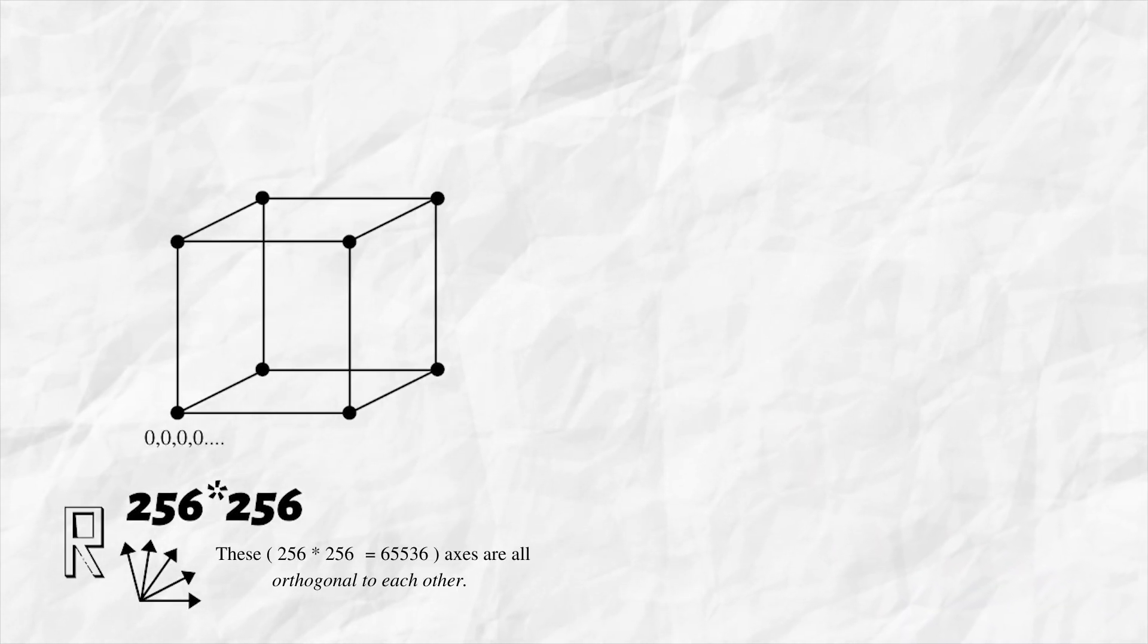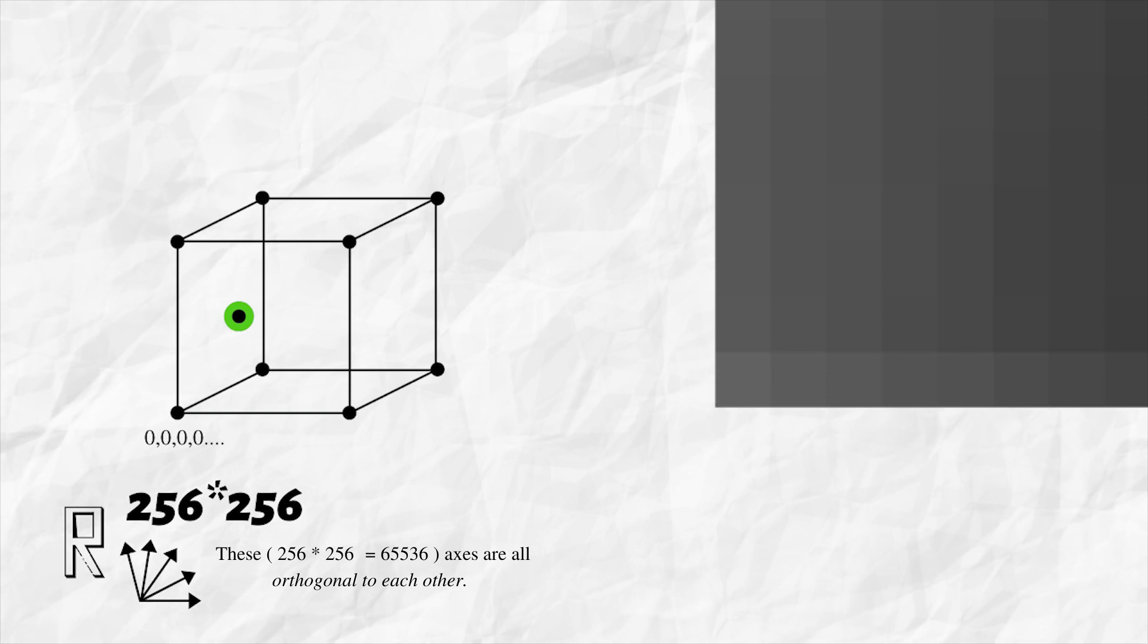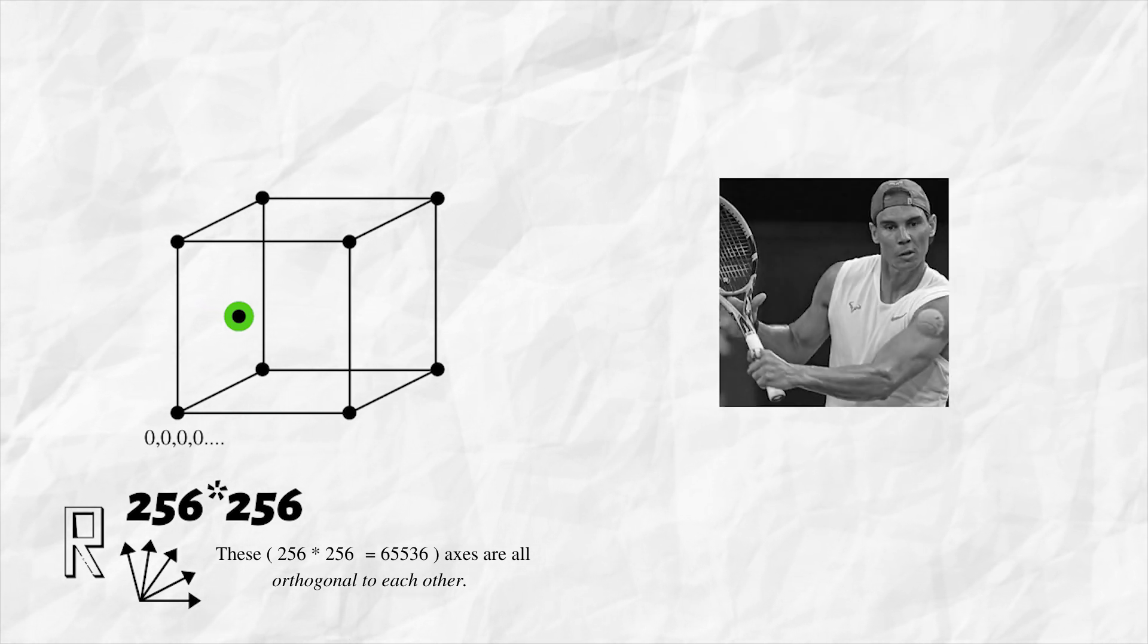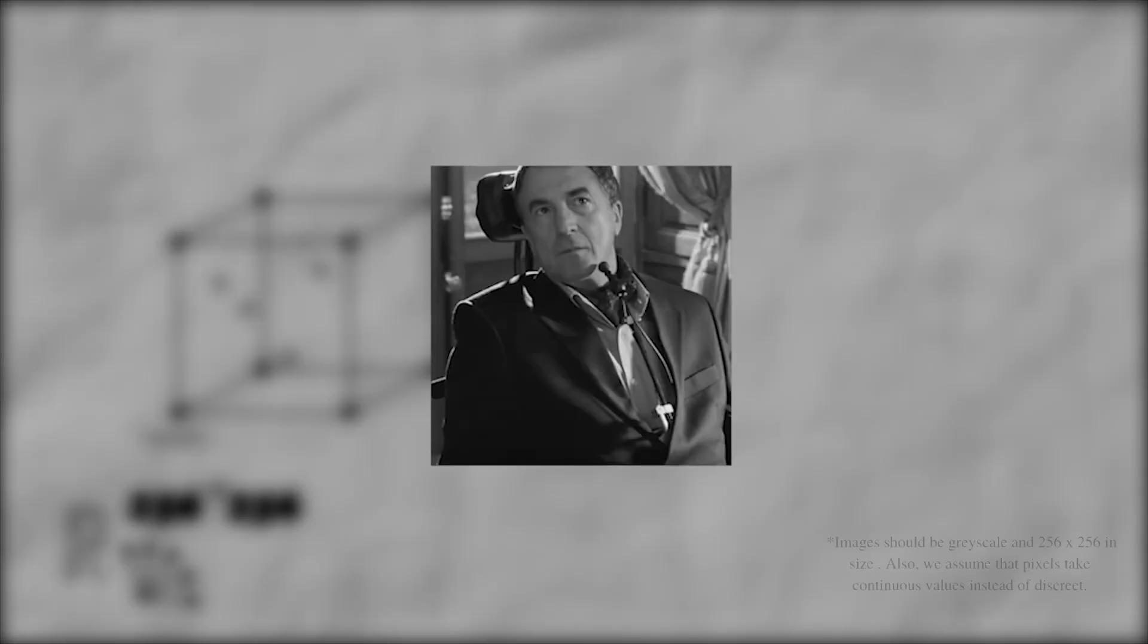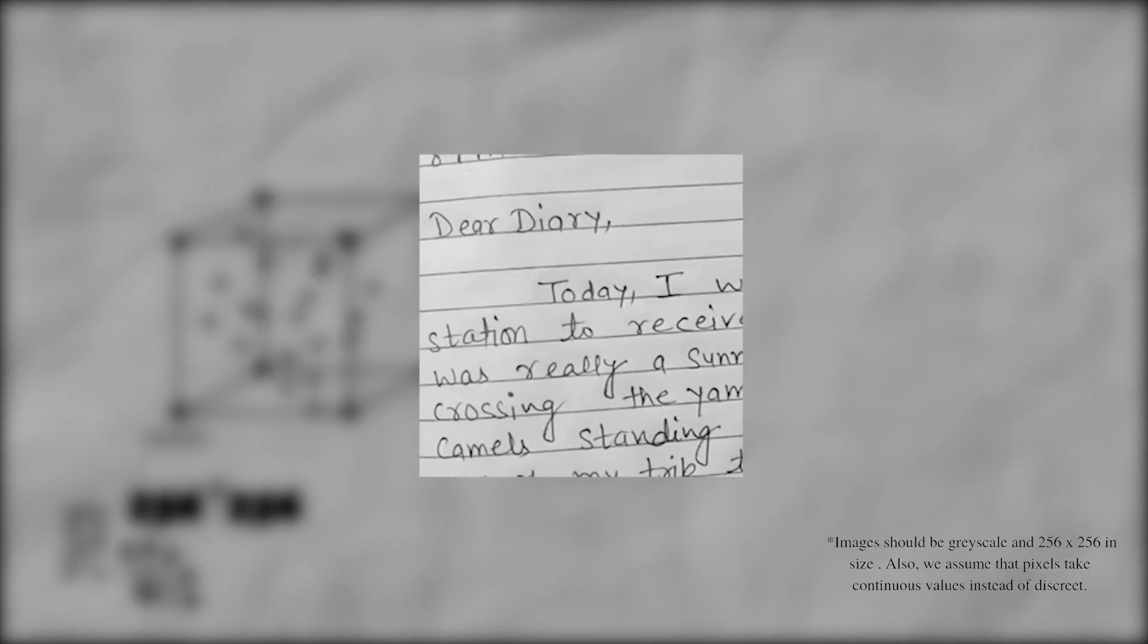Instead of 4 or 14, we now have 256 into 256 boxes. We can think of these boxes as pixels of a greyscale image. It's crazy to think that all kinds of images, screenshots, books, diaries written in different kinds of scripts are all just points in this hypercube.